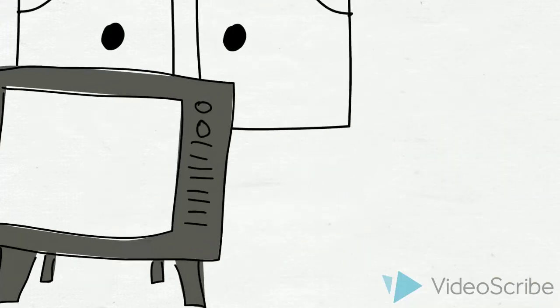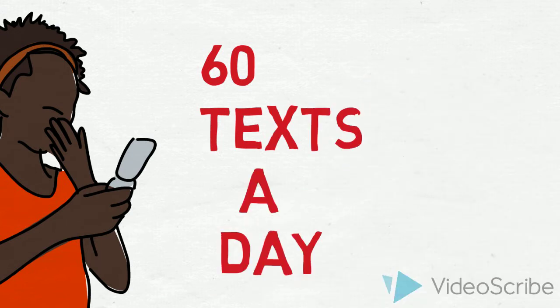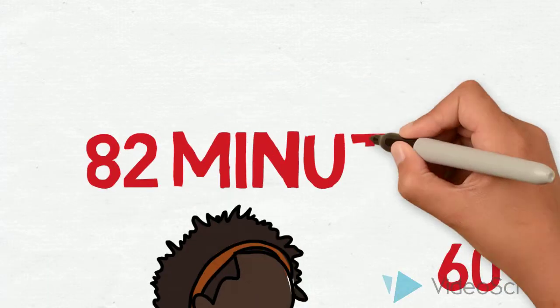71% of teens have TVs in their bedrooms and watch approximately 3 hours a day. A teen sends 60 texts a day, and on average they spend 82 minutes per day on their phones.